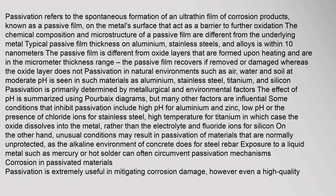Passivation — main article. Passivation refers to the spontaneous formation of an ultrathin film of corrosion products, known as a passive film, on the metal surface that acts as a barrier to further oxidation. The chemical composition and microstructure of a passive film are different from the underlying metal. Typical passive film thickness on aluminium, stainless steels, and alloys is within 10 nm. The passive film is different from oxide layers formed upon heating, which are in the micrometer thickness range.